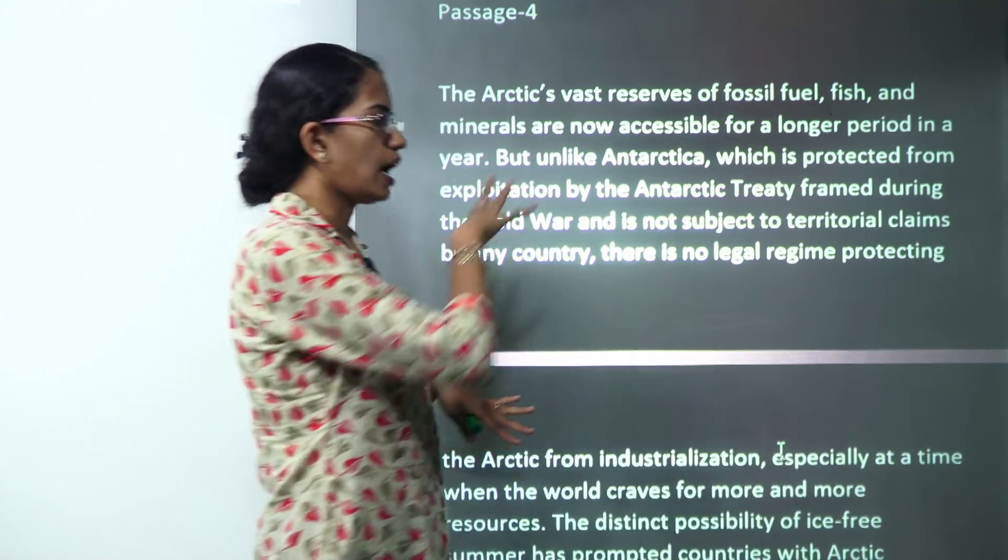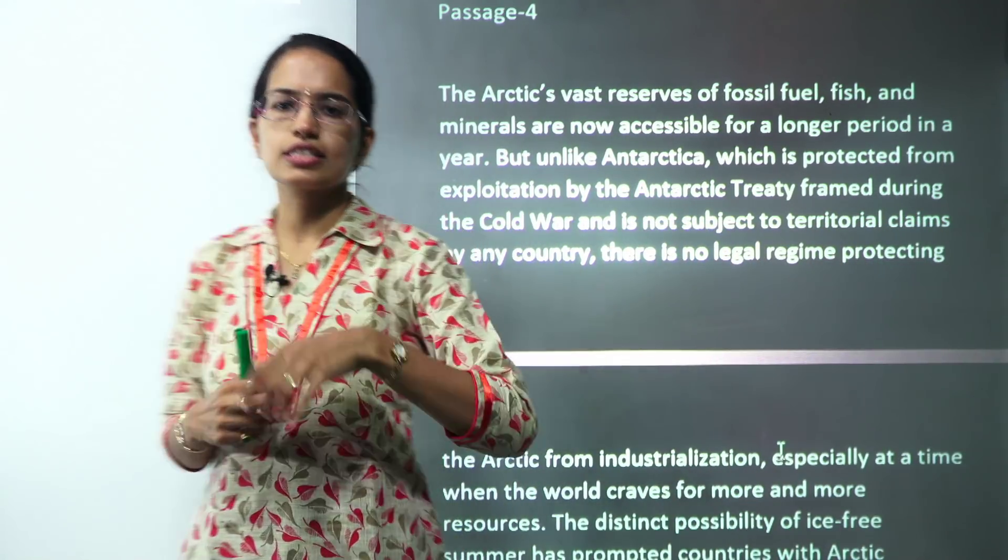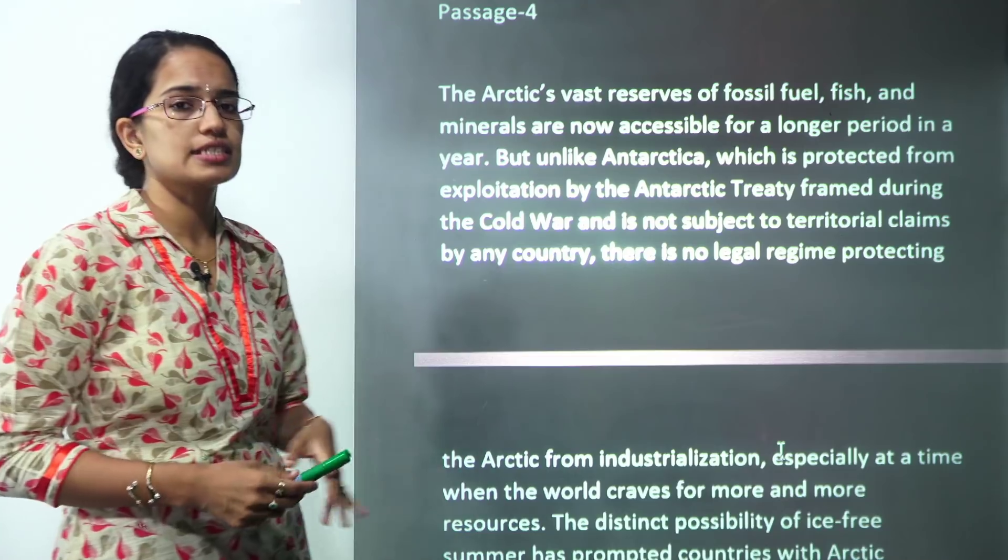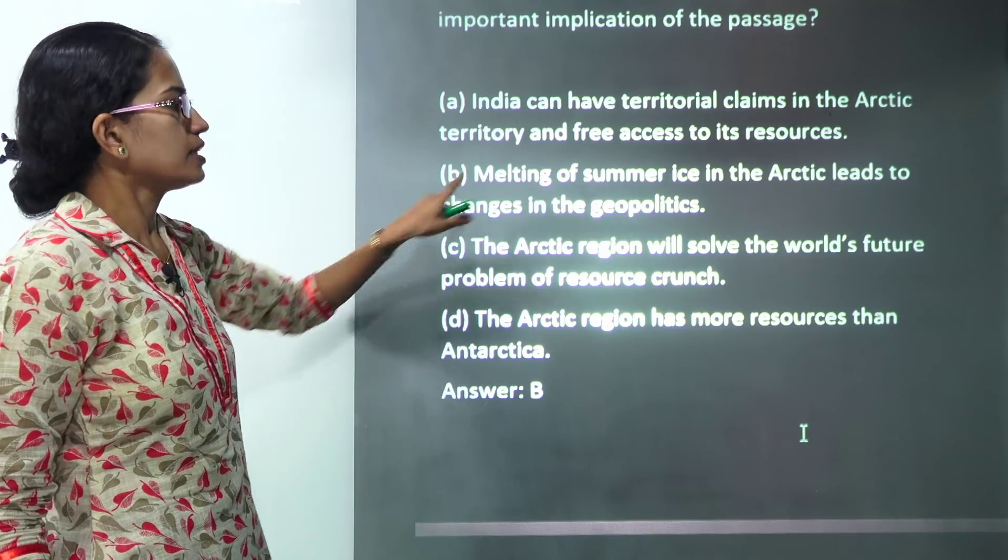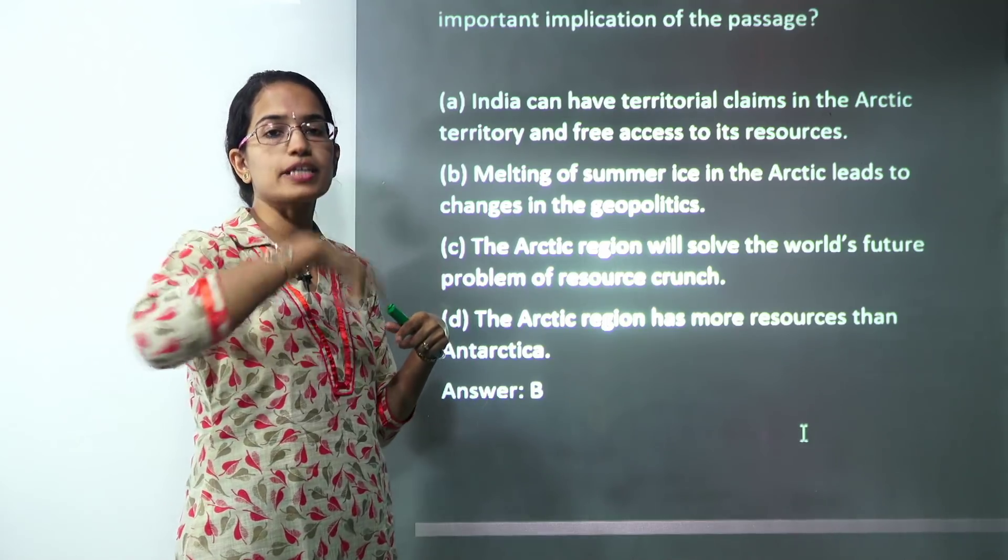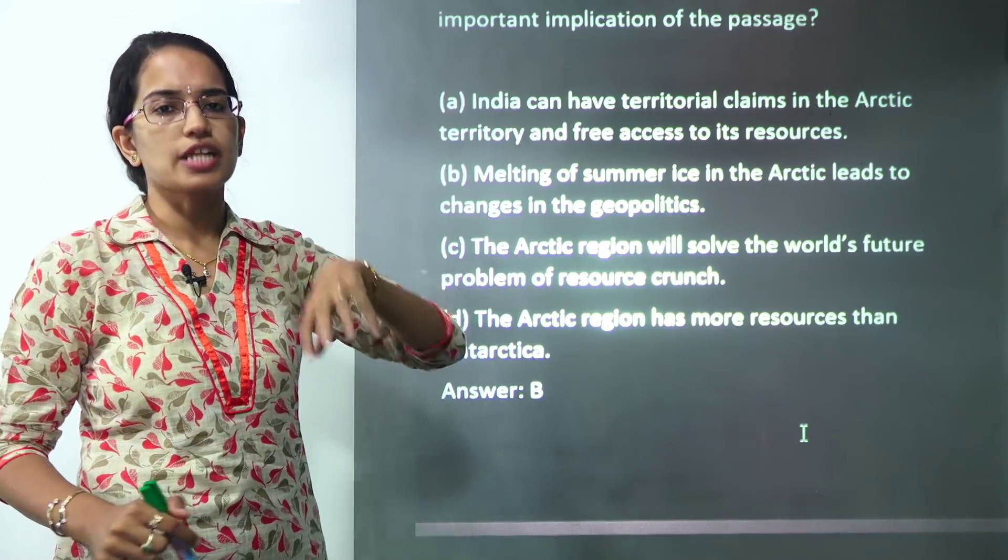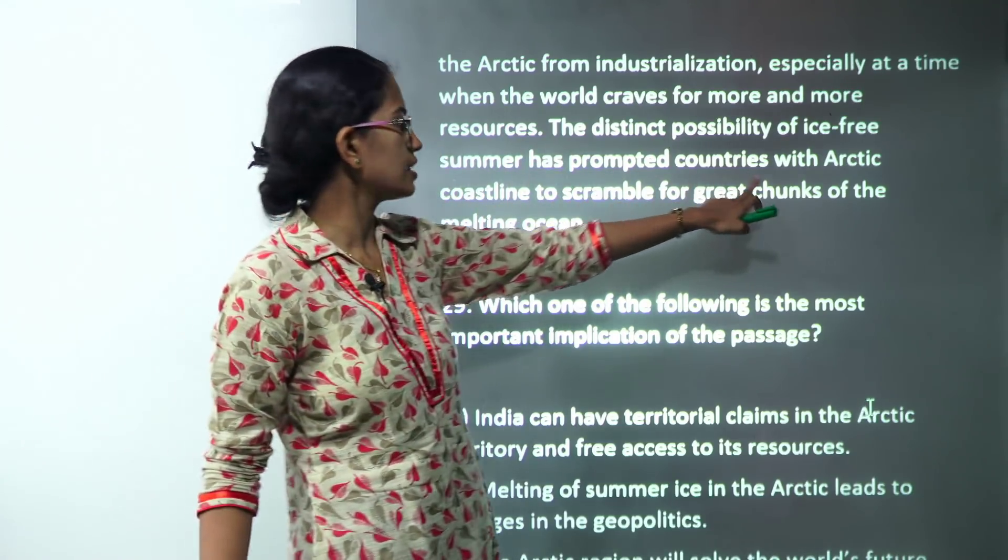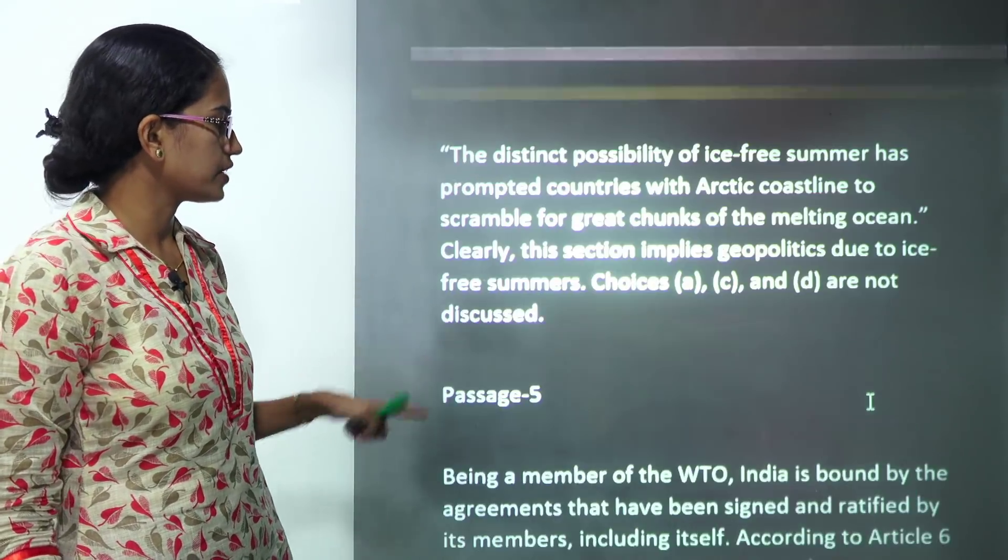This passage talks about the Arctic region. It says in the Antarctic region you had the Antarctic treaty, so you had restrictions for different countries over the usage. However, there is no such thing in existence at present in the Arctic region. What could be the implication? The melting of the ice in the Arctic leads to changes in the geopolitics because since the melting is taking place, people are moving to the coastlines of the Arctic. This would lead to changes in geopolitics because they would try to acquire certain territories there. It has promoted countries with Arctic coastline to scramble for great chunks. And this line itself makes the answer very clear here.